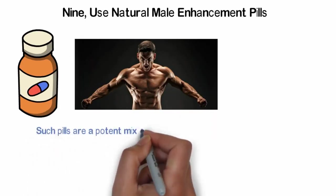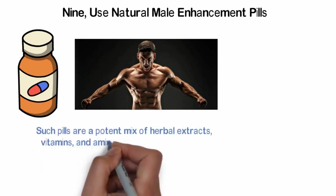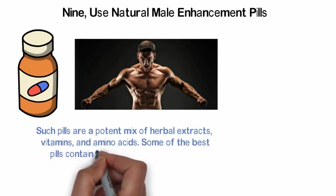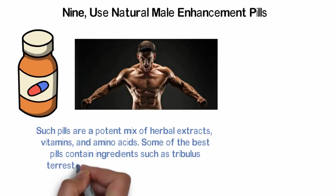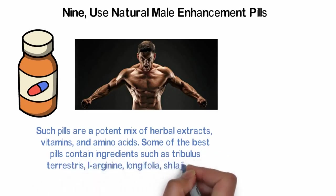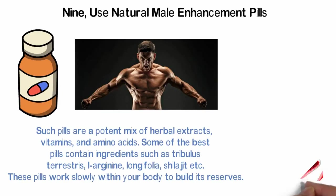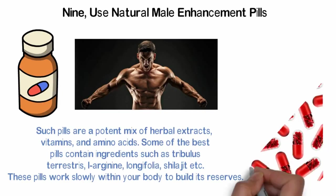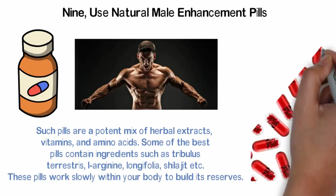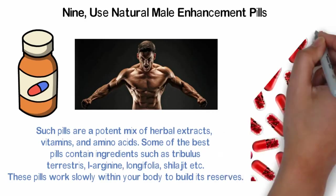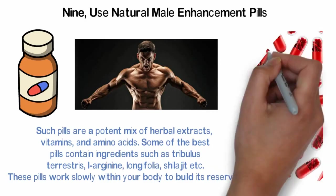Such pills are a potent mix of herbal extracts, vitamins, and amino acids. Some of the best pills contain ingredients such as tribulus terrestris, L-arginine, longifolia, shilajit, etc. These pills work slowly within your body to build its reserves. They not only help you increase your staying power but also boost blood flow to the penis, so that you can achieve instant and harder erections on arousal.